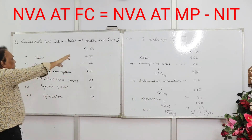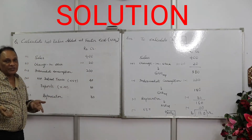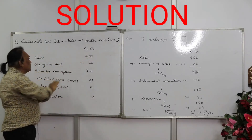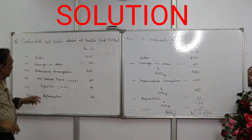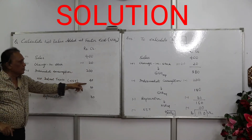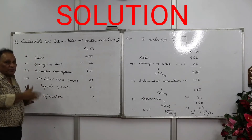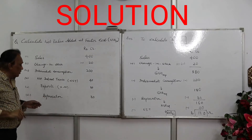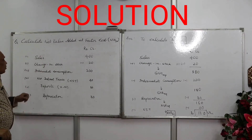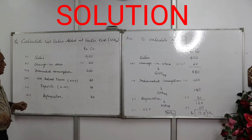This came for four marks. Calculate net value added at factor cost (NVA at FC). All values are in rupees and crores — don't forget to write that in exams. Given: sales = 400, change in stock = minus 20, intermediate consumption = 200, net indirect taxes = 40, exports = 50, depreciation (consumption of fixed capital) = 30.